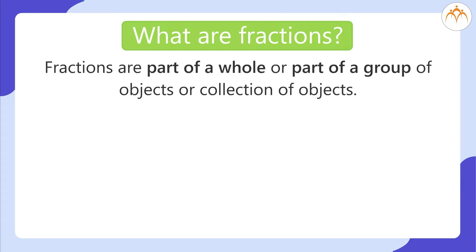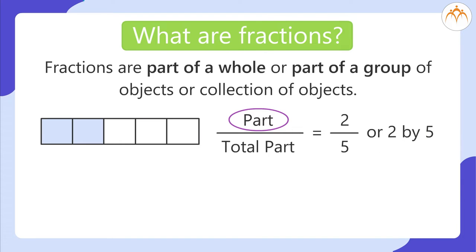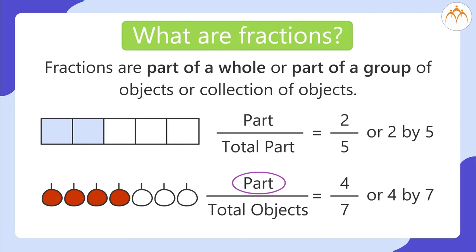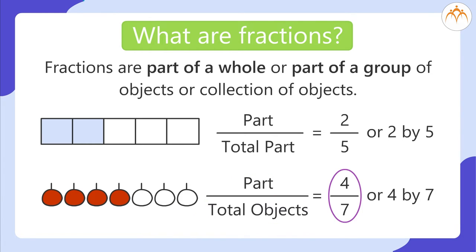Fraction as part of a whole: part divided by total part equals 2 divided by 5, or 2 by 5. Fraction as a part of a collection: part divided by total objects is equal to 4 divided by 7, or 4 by 7.